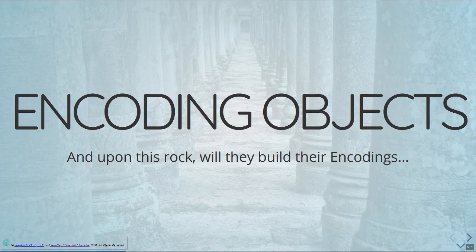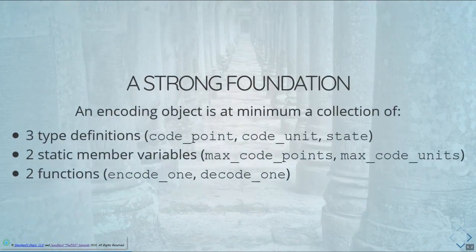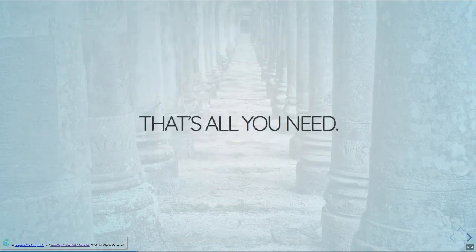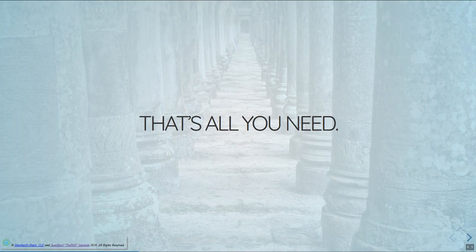Now that we've gotten past some of the constraints, let's talk about encoding objects and how they would be useful. An encoding object is at minimum a collection of three type definitions — code point, code unit, and state — two static member variables, which are integers telling you the maximum number of code points and code units that can be output by a single operation, and then two operations: encode_one and decode_one. Encode_one takes some code points and outputs some code units in the specified encoding; decode_one takes code units of that encoding and outputs code points. And that's basically how that works. That's it.